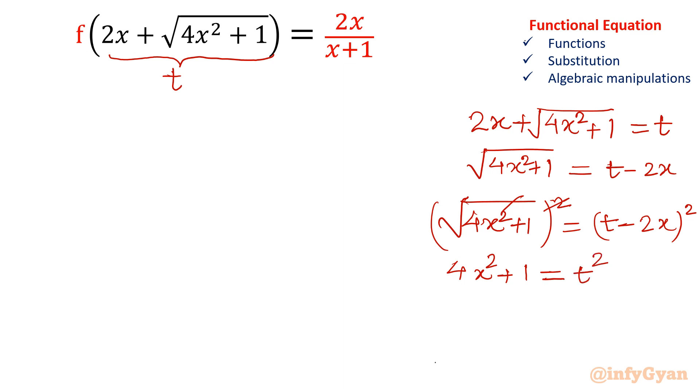So this square root will be over. Left hand side we will be having 4x square plus 1. And if I will open the whole square, it will become t square plus 4x square minus 4tx. Now you can see this 4x square term will get cancelled out. So if I will take 4tx to the left and rest of the terms to the right, then here we can find out x in terms of t.